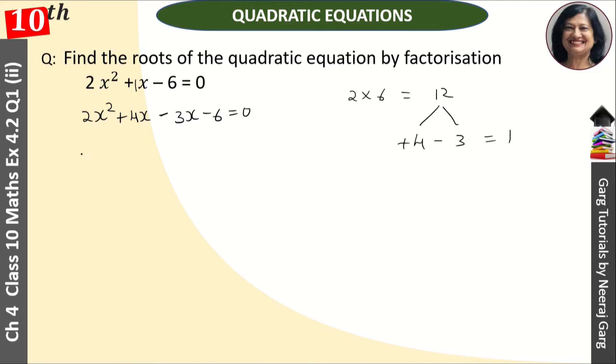What is common? 2x is common. So, here comes our x plus 2. In both of them, what is common? It is common in minus 3. And here comes x plus 2.